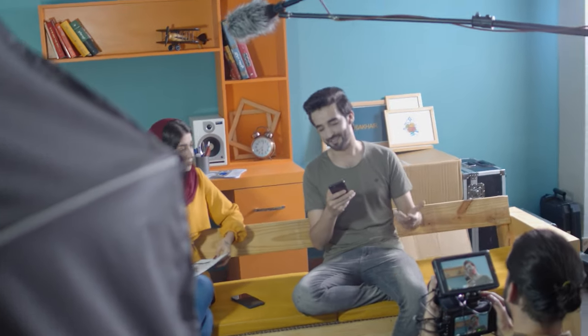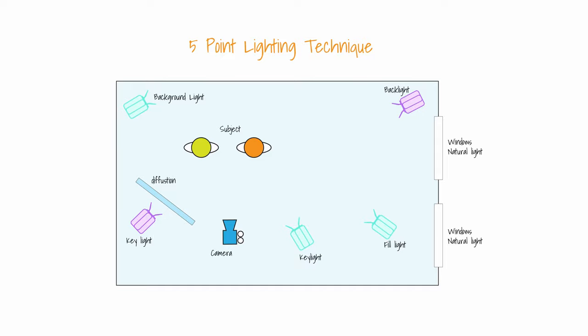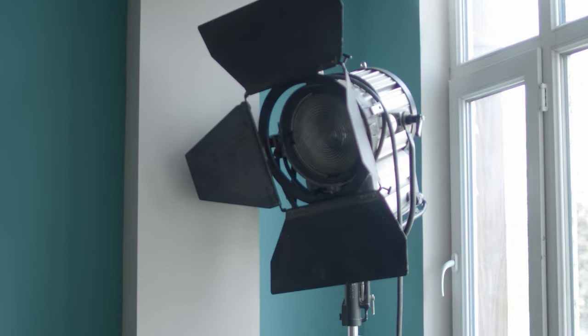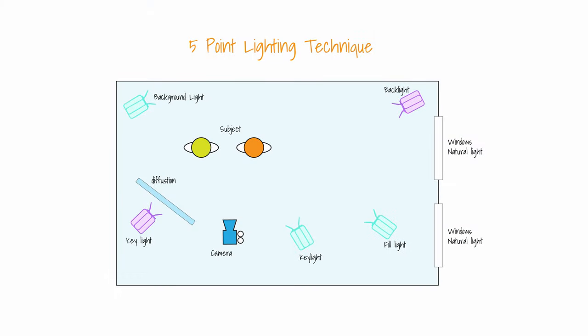Lighting is everything — it can improve your shots dramatically. As you can see here, I used a five-point lighting technique. On the left side we have the kicker or backlight, which separates the light on the left side of the character. We also have a backlight for the background, a fill light, and a key light used with diffusion to soften the light for the characters. The result is awesome lighting for this shot.